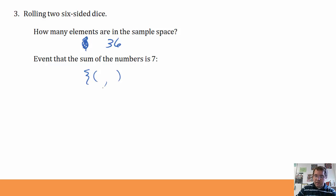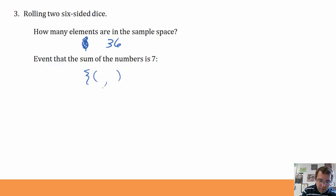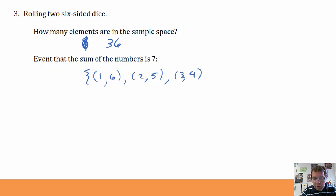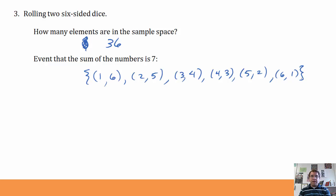What specifically is the event that the sum of the numbers I get is seven? Since each die is separate, I'll note each element of my sample space as an ordered pair, where the first number is the number I get on the first die and the second number is the number I get on the second die. So if I want the sum to be seven: (1,6), (2,5), (3,4), (4,3), (5,2), and (6,1). That's all the possible ways to get a sum of 7 — six out of my 36 elements.